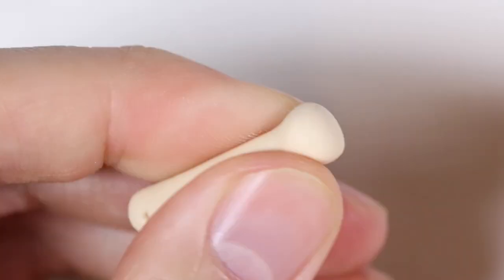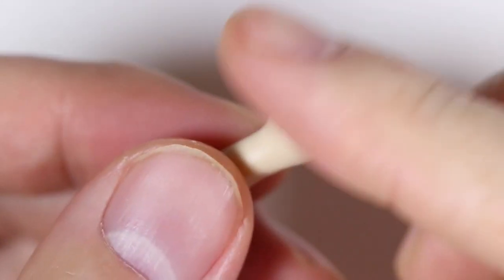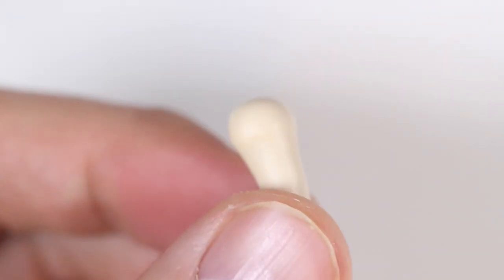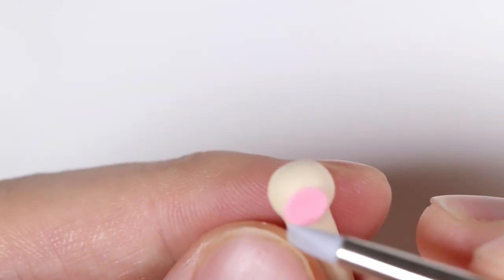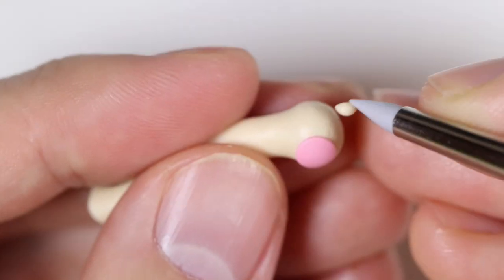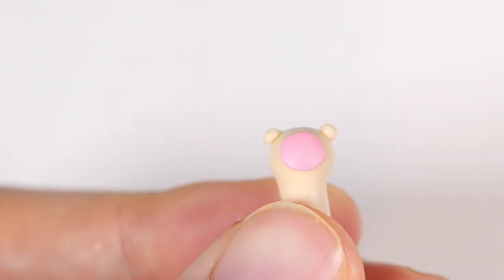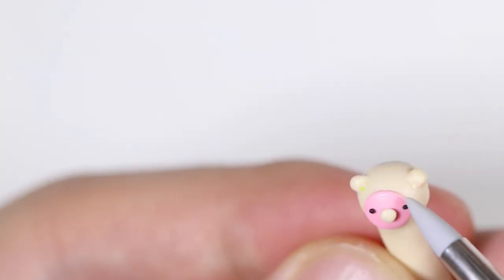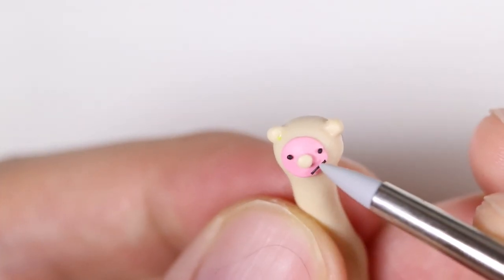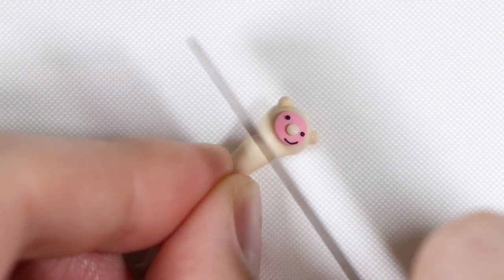Then we're going to make a little cartoon version of those Japanese hot spring monkeys. So I'm taking some tan clay, and I'm going to roll it into a ball. And we're going to add a giant pink circle on top for the face. Two little half circles for the ears. A circular nose in the middle. Along with two dot eyes. And then a lined smile. And we're going to cut the end as well.